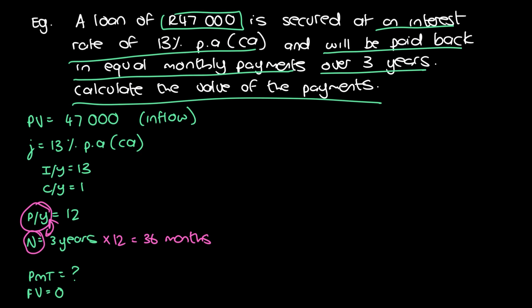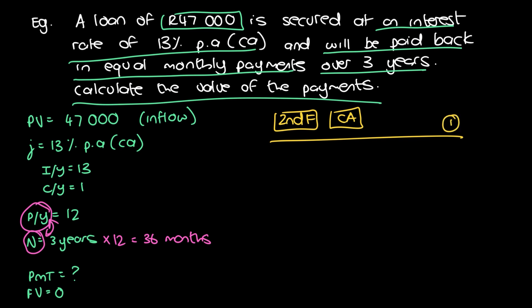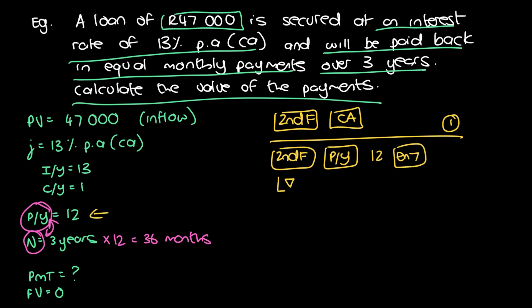Let's do the recipe for the financial calculator. First, press Second Function CA to clear out any residual information from previous calculations. Then enter the payment periods and compounding periods. This is a complex annuity because the payment periods and compounding periods are different. Press Second Function PY, enter 12, then press Enter. Push down — the CY will display as 12, but we want it to be 1, so update it with 1 and press Enter.